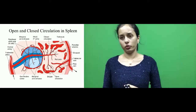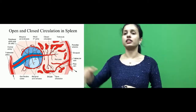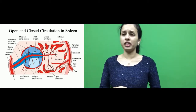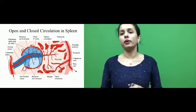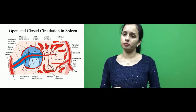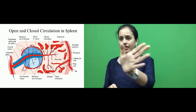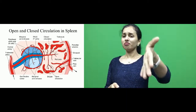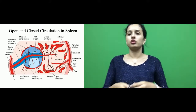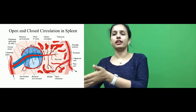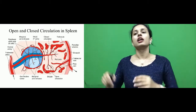From the sinuses, the blood passes to the trabecular veins, then to the splenic vein, exits through the hilum of the spleen, and the splenic vein joins with the superior mesenteric vein to form the portal vein. The picture shows both open and closed circulation occurring in the spleen. The left-hand side shows the arterial circulation and the right-hand side shows the venous side — starting from the splenic artery, through open or closed circulation, then exiting through the splenic vein.